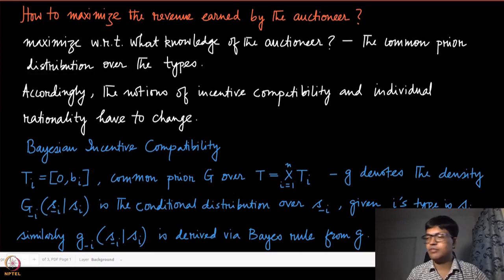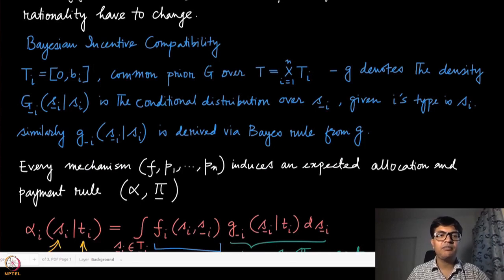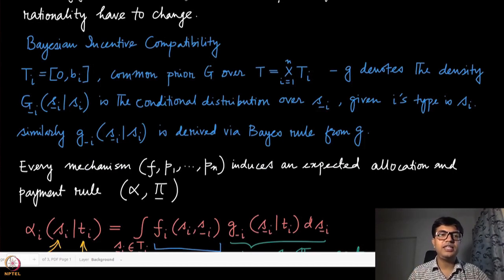That is the reason we will now shift to the Bayesian setting and redefine the notions of incentive compatibility and individual rationality in the Bayesian setting. Bayesian incentive compatibility has already been discussed earlier in this mechanism design segment.